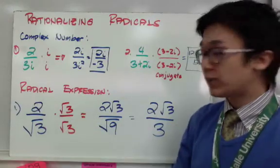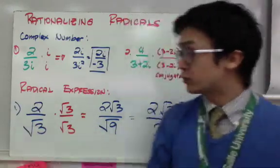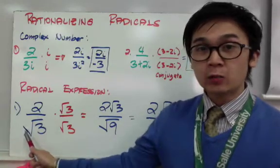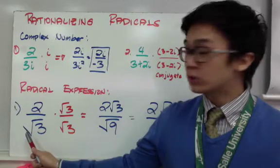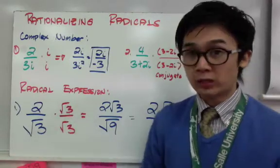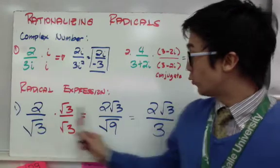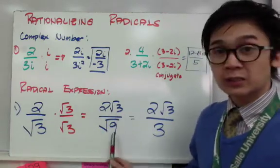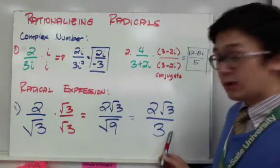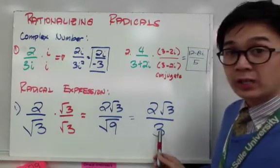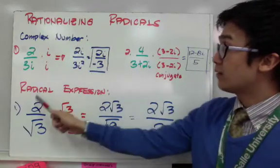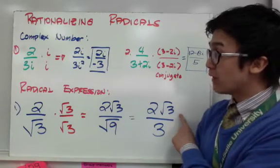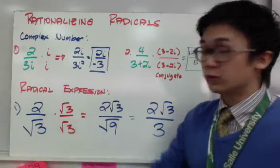Now, how do we rationalize radical expressions? For my first example, I have 2 over the square root of 3. Since we have the square root of 3 in the denominator, we need to get rid of the radical symbol by multiplying the numerator and denominator by the square root of 3. We have 2 square root of 3 all over the square root of 9, and the square root of 9 is simply 3. So our denominator is now a real number, and our final answer is 2 square root of 3 over 3.